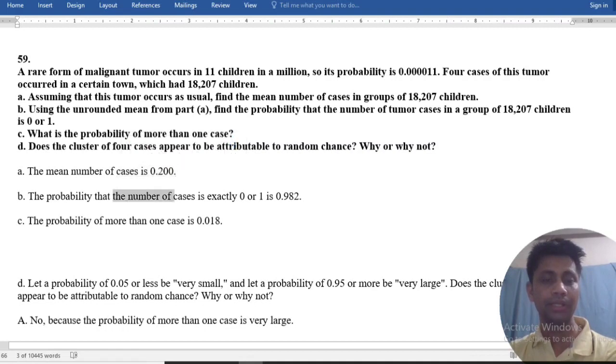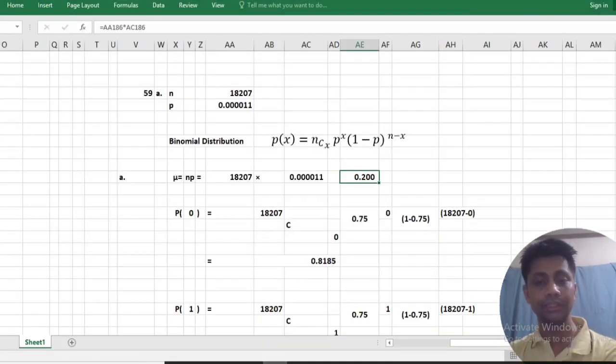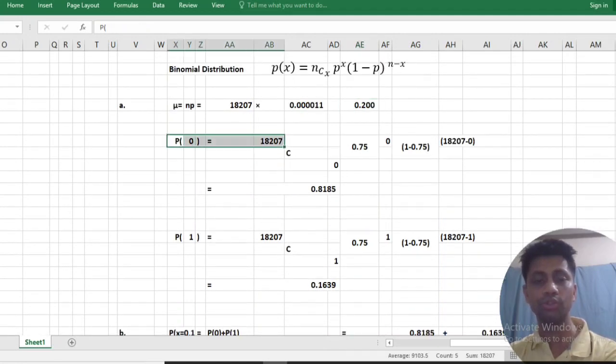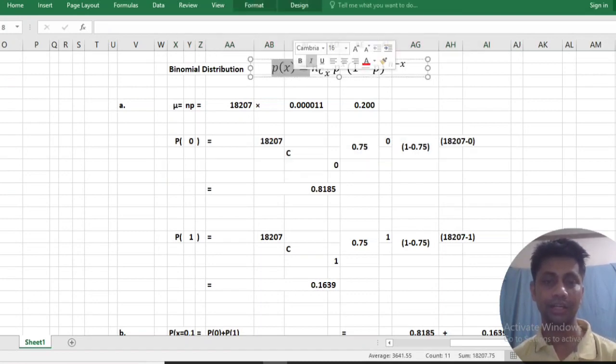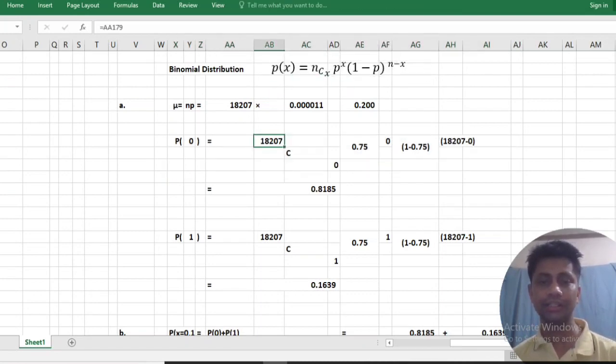Find the probability that case is exactly 0 or 1. This is binomial distribution. By putting binomial distribution here, we get this result by using calculator.